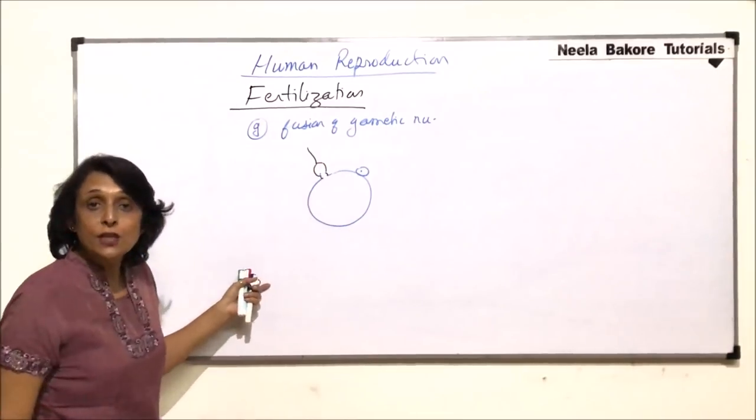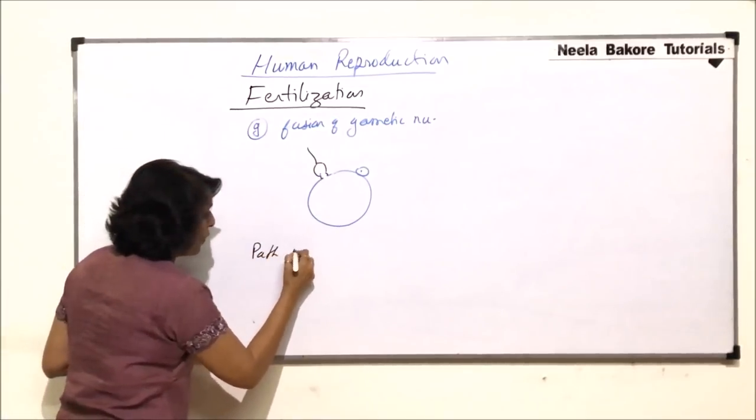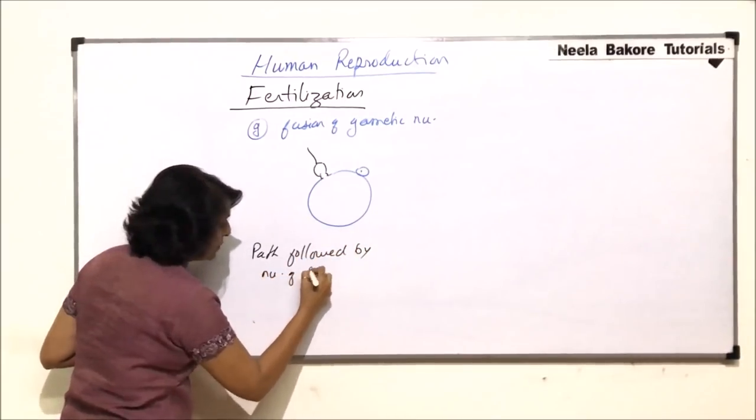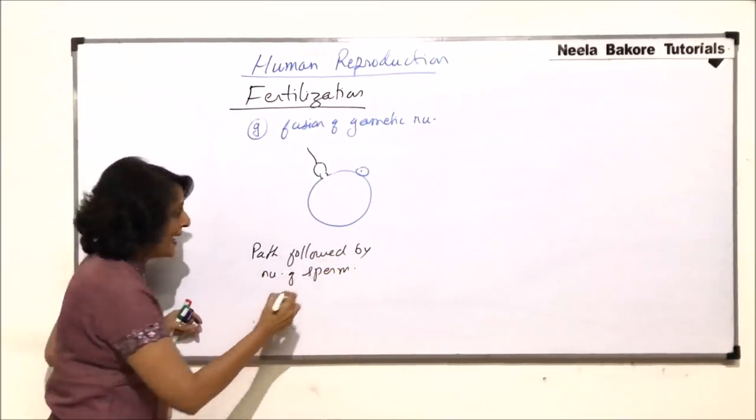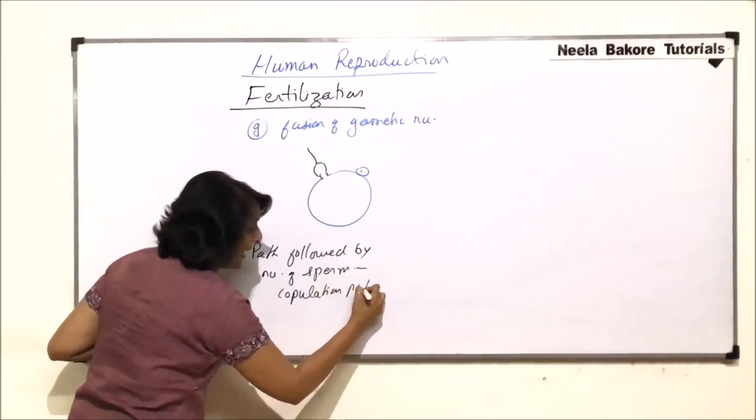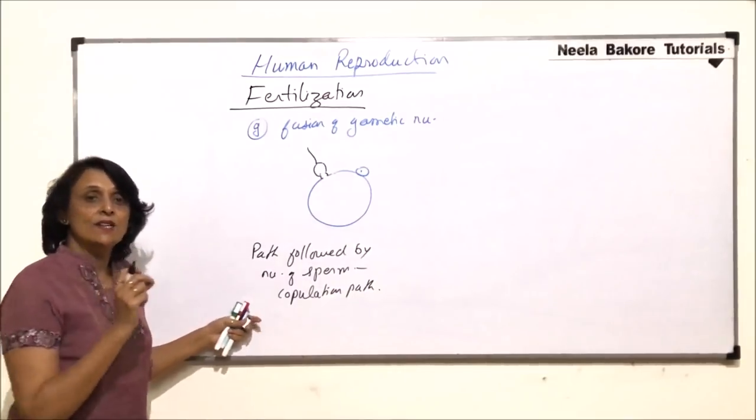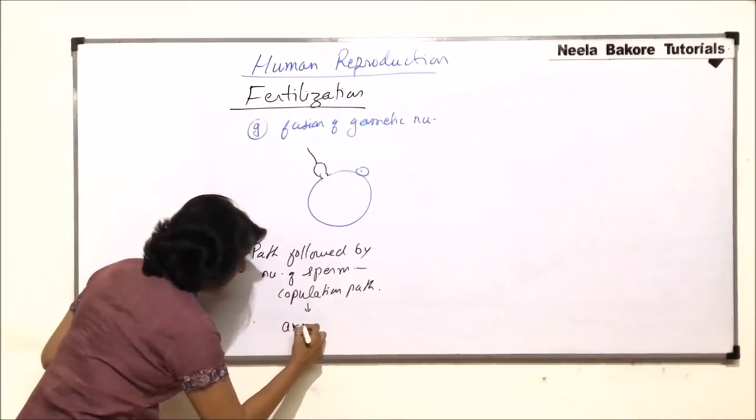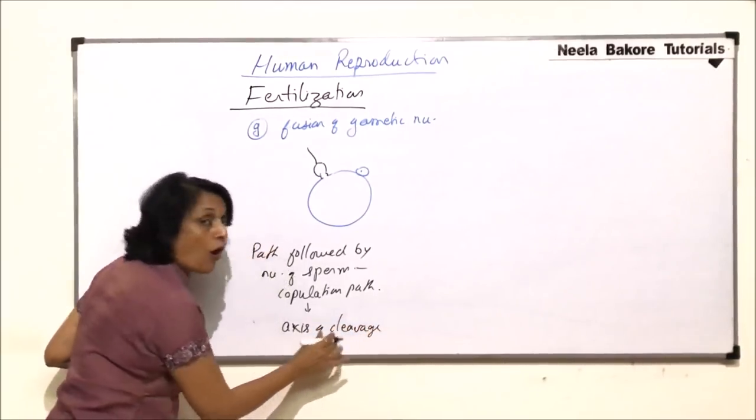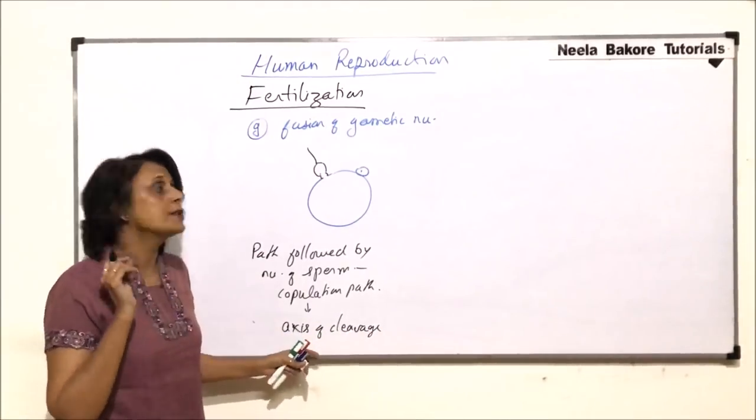The nucleus of the sperm follows a path. So the path followed by the nucleus of sperm is known as copulation path, and this copulation path is going to decide the axis of first cleavage, axis of cleavage of the zygote. The way zygote is going to divide, its axis will be decided by this path.